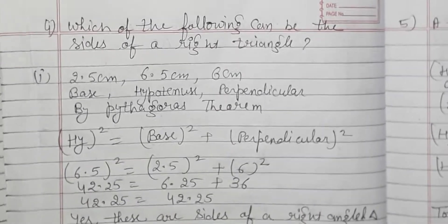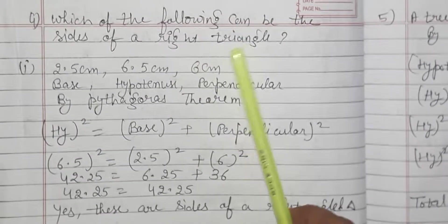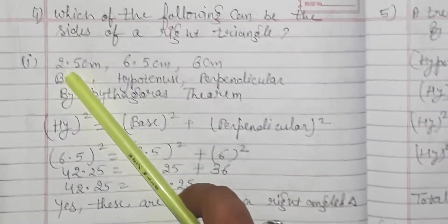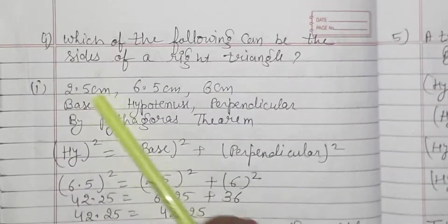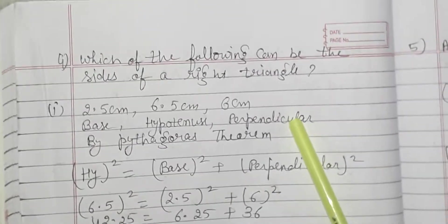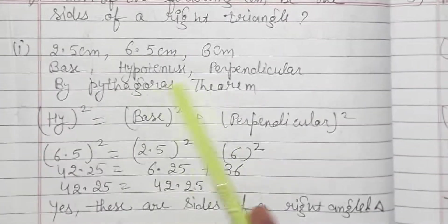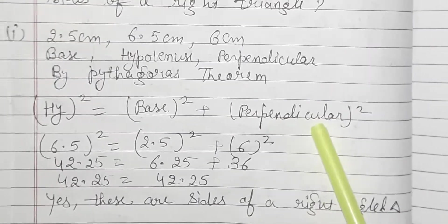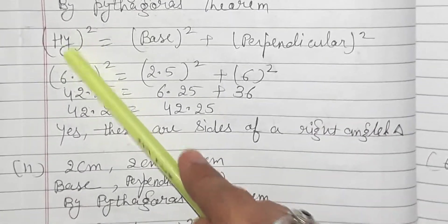There are three parts given in the book. Part (a): 2.5 cm, 6.5 cm, and 6 cm. The longest side is called the hypotenuse, and the other two are the base and perpendicular. By Pythagoras theorem: hypotenuse² = base² + perpendicular². Here hypotenuse is 6.5 cm.